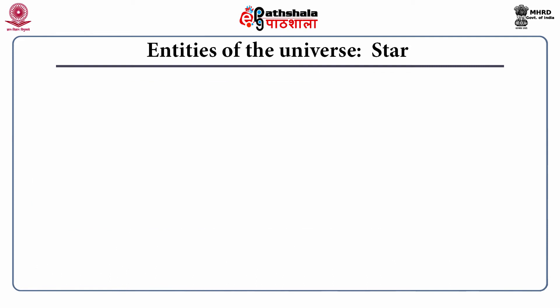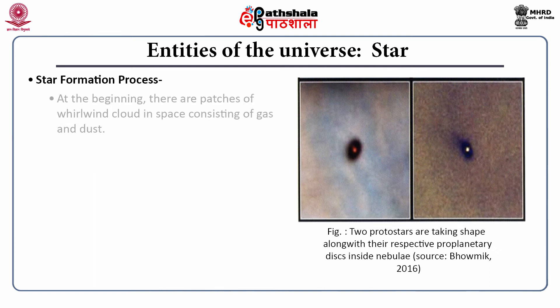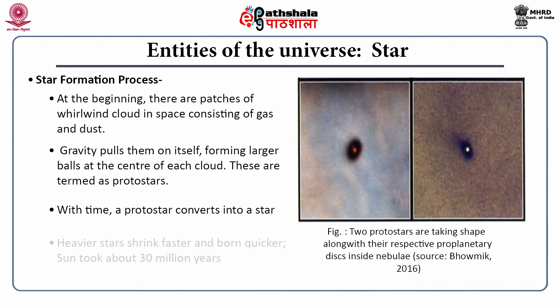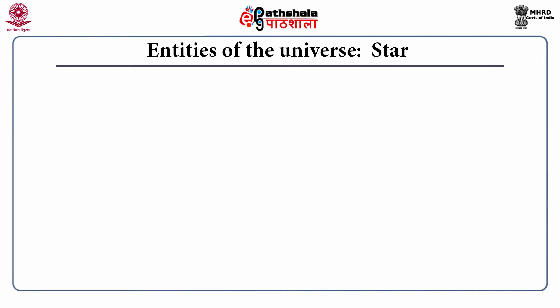The second entity is a star. At the beginning, there are patches of whirlwind cloud in space consisting of gas and dust. Gravity pulls them inward, forming larger balls at the centre of each cloud — these are termed protostars. With time, a protostar converts into a star. Heavier stars shrink faster and are born quicker. Our sun took about 30 million years to form.